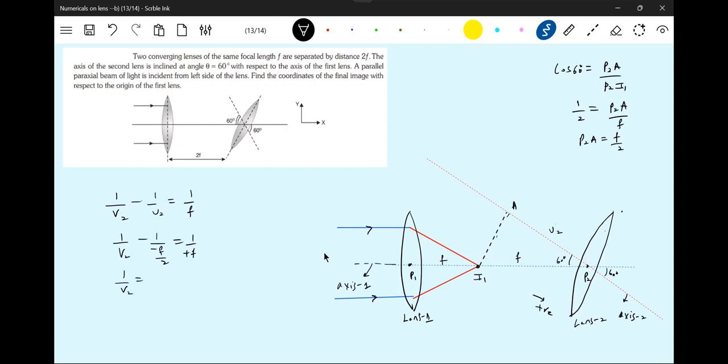This will be minus F by 2 equal to. 1 by V2 is equal to 1 by F minus 2 by F. This will be equal to minus F. Minus F means somewhere it has to be. This distance will be F by 2.